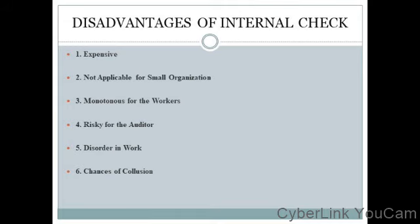The next disadvantage is chances of collusion. Though the internal check system protects against errors and frauds, in reality there may be chances of collusion. Collusion means joining hands — that is, two or more employees joining together to indulge in fraud or malpractices.